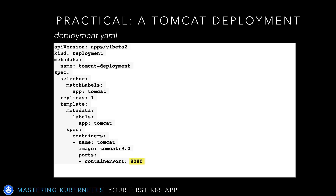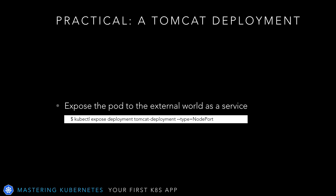Port 8080 is where the Tomcat application server will listen by default on the Apache-supplied image. We have to expose any ports in our deployment to the outside world. For that, we'll use the kubectl command, similar to what we did when testing Minikube. We'll use the kubectl expose deployment command to expose our service named tomcat-deployment as a NodePort. NodePort tells Kubernetes that we'd like to expose the container port of 8080 to the external world on an external port.